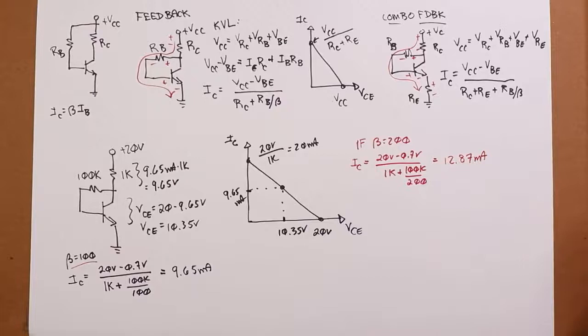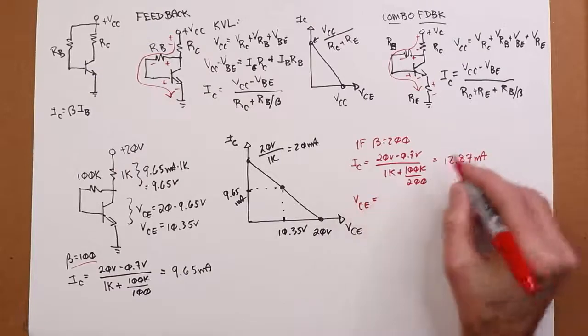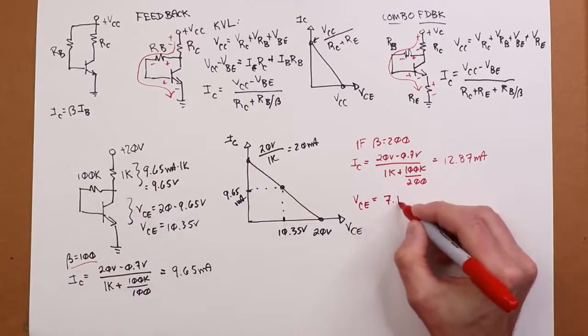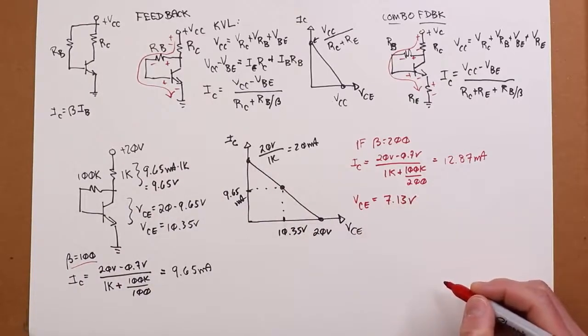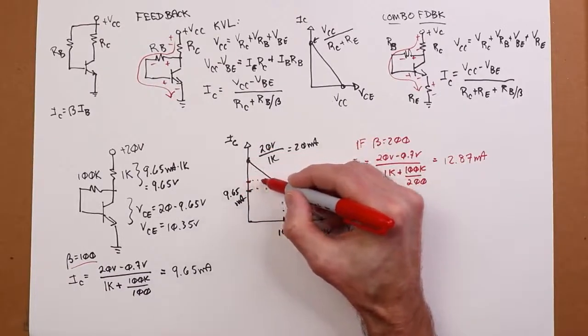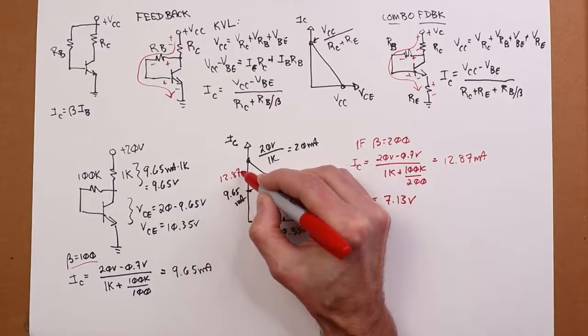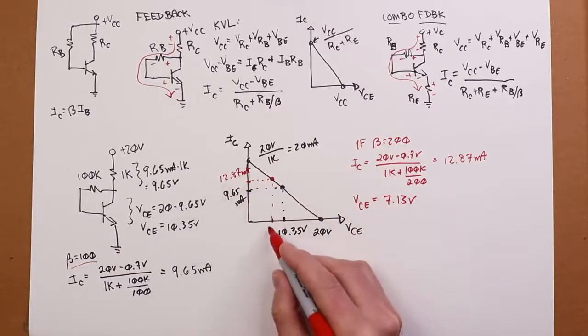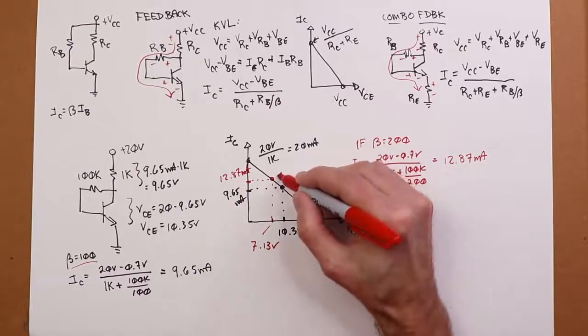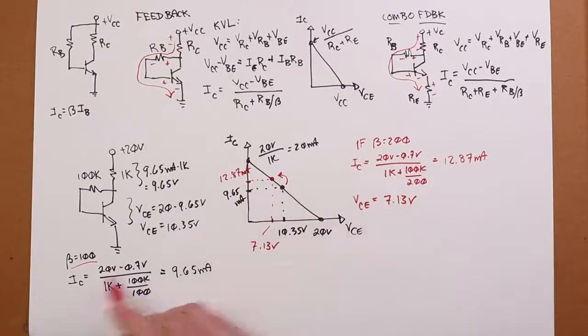So it's gone up. But it hasn't gone up as much. And if we then take that current, 12.87 volts across the 1K, subtract that from the 20 volts, we get 7.13 volts for VCE. So where are we? We've come up to, you know, if that's 20, that's 9.65, 12 is going to be around here somewhere. And 7.13 volts there. So we have movement. But, again, that's a 100% change in beta. We went from 100 to 200.